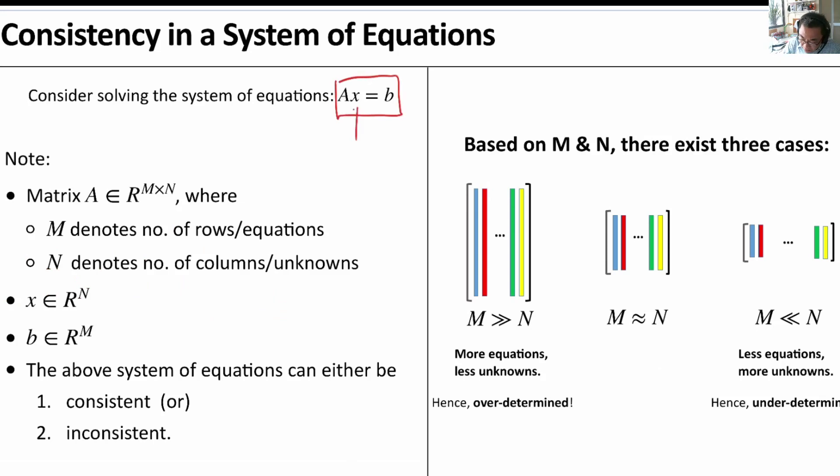And by least squares, we are talking about find X given A and B. The word least squares means find the best X that approximates B.